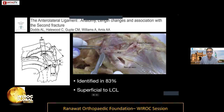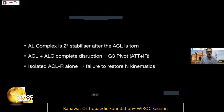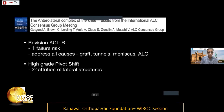The ALL has been quite in the news. It can be identified in about 83% of patients and courses superficial to the LCL, which is an important anatomical point. The anterolateral complex is the key secondary stabilizer after the ACL is torn. When there is disruption of both the anterolateral complex and the ACL, you have a grade three pivot shift, which must be restored with a combined ACL and lateral procedure.